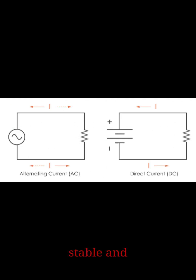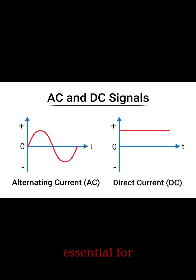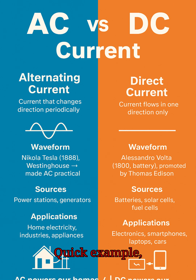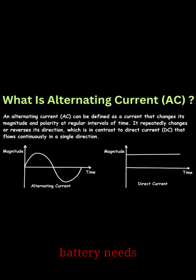DC is stable and reliable for electronics, can be stored in batteries, and is essential for low-voltage devices. Its drawback is that it is expensive to transmit over long distances due to high losses. For example, when you charge your phone, your wall socket provides AC, but the charger converts it to DC because your phone's battery needs DC.